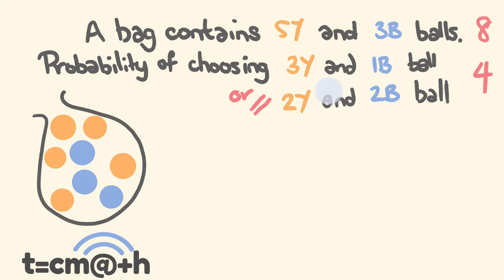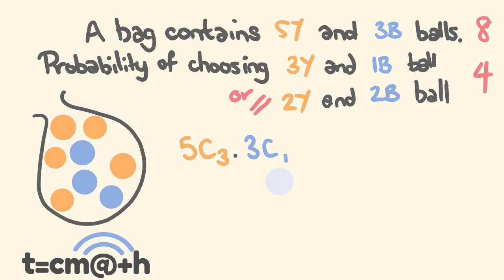This is a bit more complex. We're going to first work out this part — three yellow and one blue — and then work out the other part, and then find the total probability. For three yellow and one blue: for the yellow, from five we are trying to choose three balls. We multiply this by the blue combinations: three blue balls, choosing one.